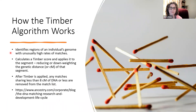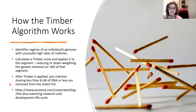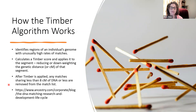A little bit more about how the Timber algorithm works: they identify regions of an individual's genome with an unusually high rate of matches. Timber then calculates a Timber score and applies it to that specific region, reducing or down-weighting the genetic distance — which we call centimorgans — of that segment. After Timber is applied, any matches sharing less than eight centimorgans of DNA are removed from the match list. When we saw a big change a few years ago when many of our matches were removed, that was because they were updating their algorithm. Those were likely not correct matches, so that was an okay change.